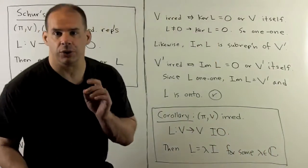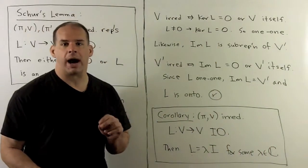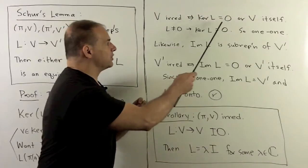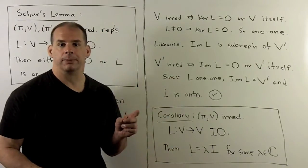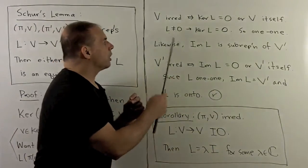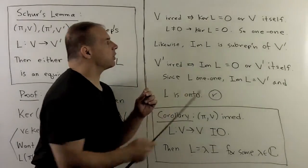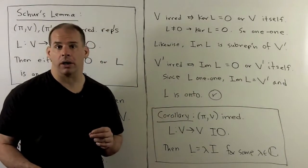Now, because V is irreducible, that only leaves two options: either the kernel of L is zero or all of V. Because L is non-zero, the kernel of L must be exactly zero, and L is one-to-one.